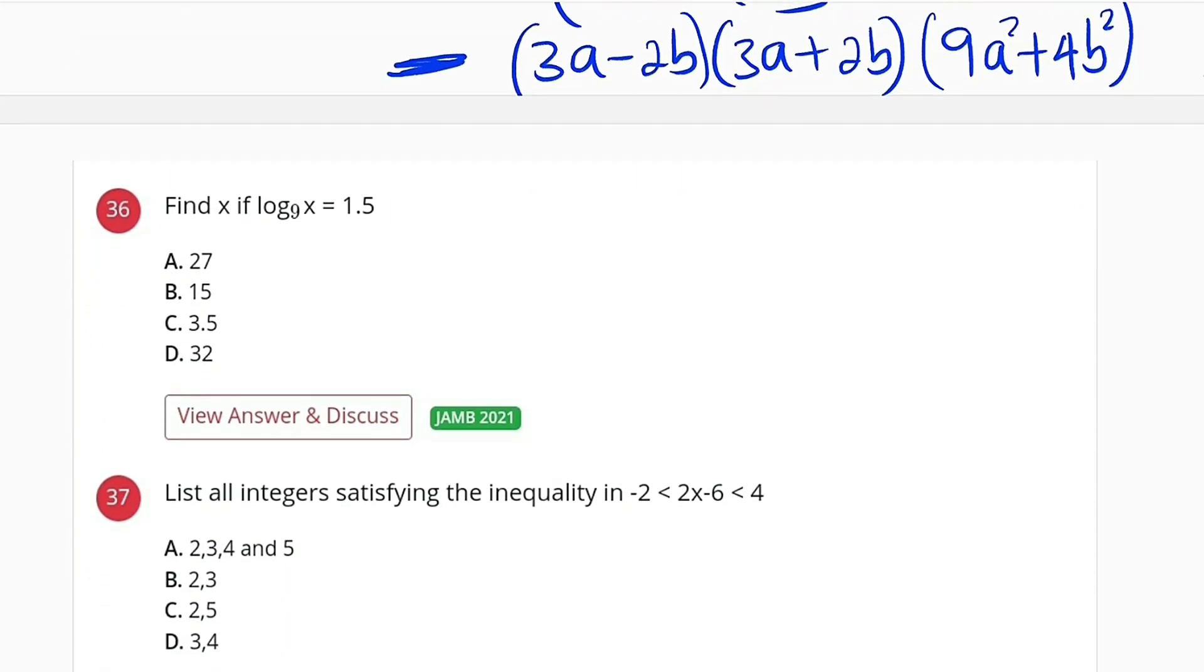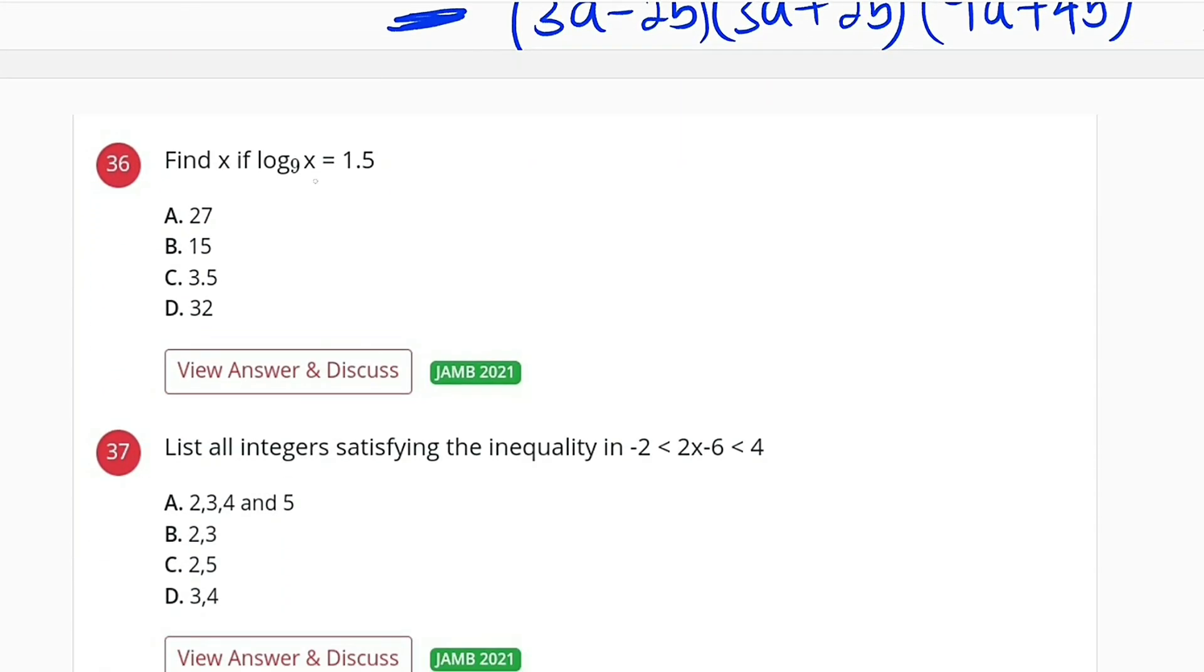Moving on to question number 36, we are almost done. Log base 9 of x equals 1.5. So log base 9 of x is equal to 15 divided by 10, because 15 divided by 10 is the same thing as 1.5.